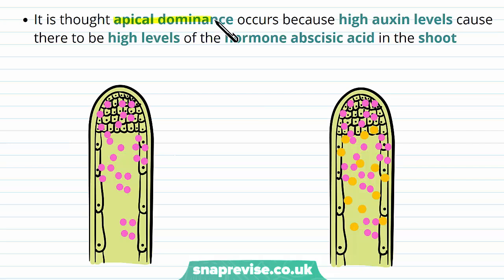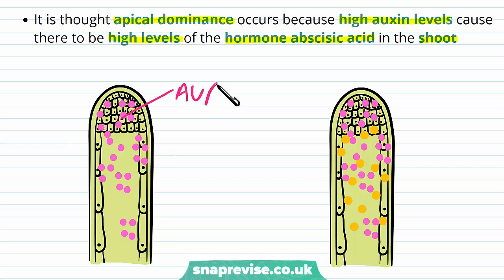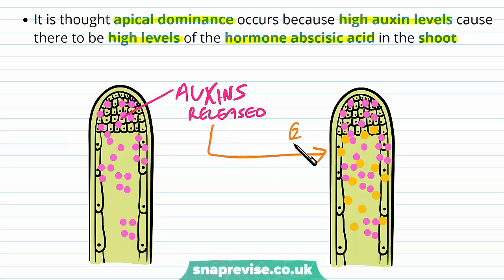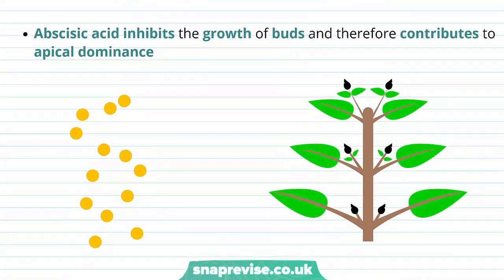It's thought that apical dominance occurs because high auxin levels cause there to be high levels of the hormone abscisic acid in the shoot. So the auxin itself isn't directly causing the apical dominance, but it's causing the action of another molecule to kick in. The auxins are released first, and once released they cause the release of abscisic acid as a second step. The role of abscisic acid is to inhibit the growth of buds, and this contributes to apical dominance.